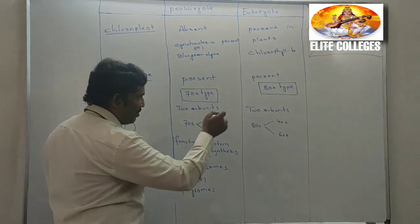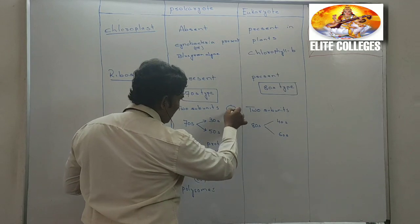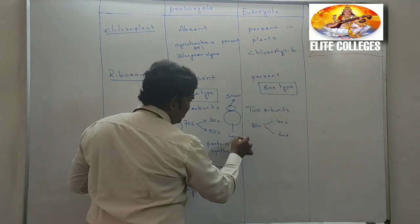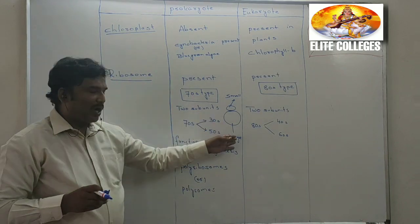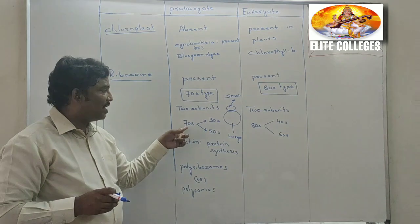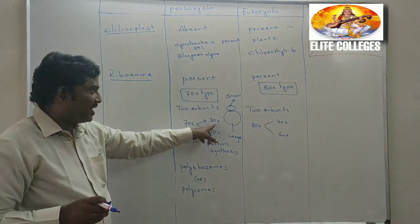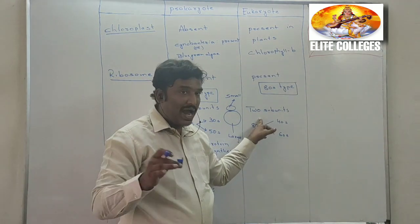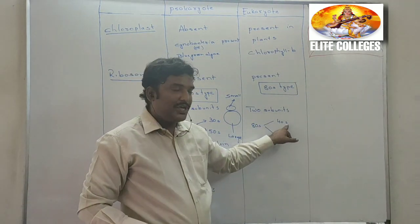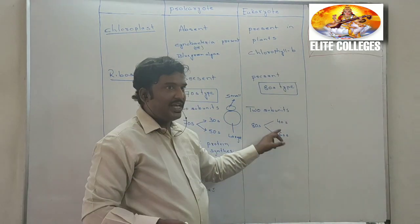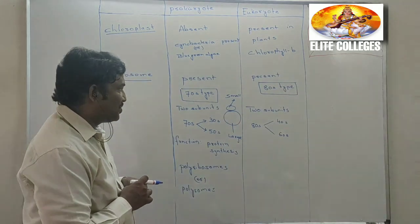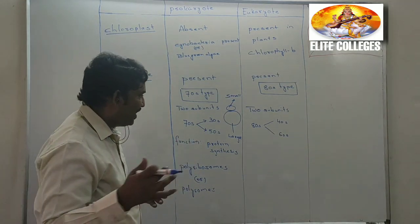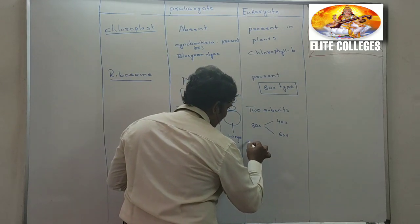Every ribosome has two subunits — a small subunit and a large subunit. In the 70S ribosomes of prokaryotes, the small subunit is called the 30S subunit and the large subunit is called the 50S subunit. In eukaryotes, the small subunit is called the 40S subunit and the large subunit is called the 60S subunit. These two subunits are bound or attached to each other with the help of magnesium ions.